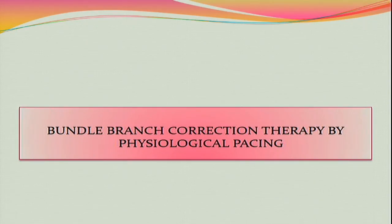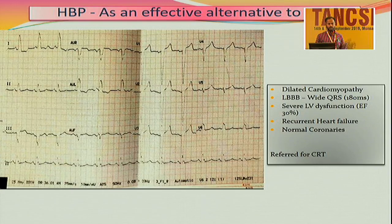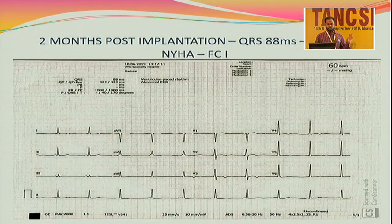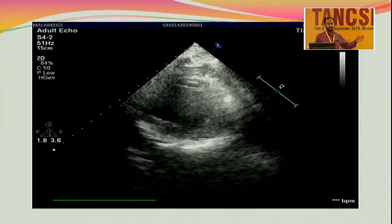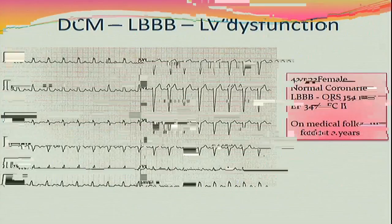After successfully treating sinus node dysfunction, AV nodal block, and intra-Hisian blocks, I started thinking about correcting bundle branch block. Many of my patients were in follow-up with LBBB without money for CRT, so I started calling them back and putting in His bundle or left bundle pacing. My first LBBB case — referred by Aravali sir — had a QRS of 180ms and EF of 30%. With a single His bundle lead, the QRS was corrected; at two-month follow-up, QRS was 88ms and EF was 60%. The job was done — she's doing well and I've stopped all the medications.